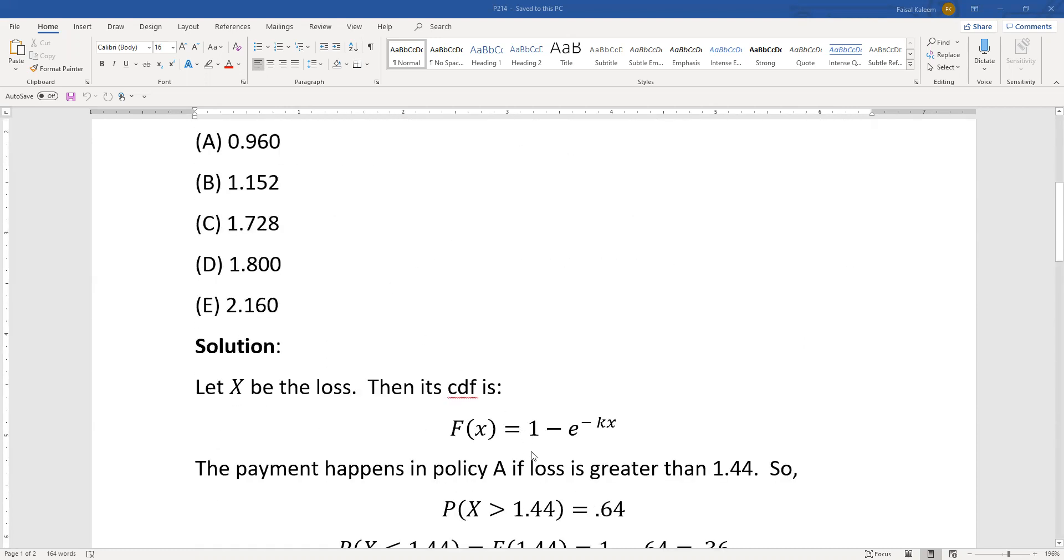will be 1 minus e to the negative kx, where k is just a constant. If k is the mean, then it's 1 minus e to the negative x over k, but in this particular problem we don't care what the mean is, so we can write it as 1 minus e to the negative kx.